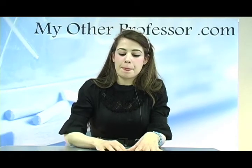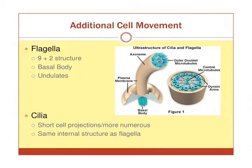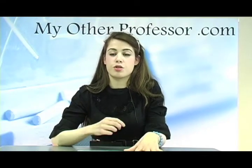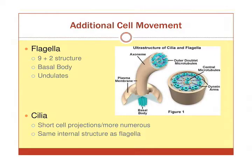Cell movement is driven by actin, microtubules, and intermediate filaments. Eukaryotic cells also have flagella; however, flagella in eukaryotes look very different from those in prokaryotes. They have a nine plus two structure — nine microtubules surrounding two central microtubules — and this tube is inserted into a basal body which projects inward into the cell. Cilia have the same basic structure as flagella but are shorter and found in larger groups.